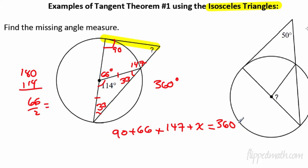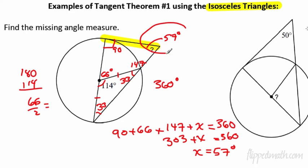So what are we going to do? We're going to set up an equation. 90 plus 66 plus 147 plus this little question mark, which I don't know, that all has to equal 360. Let's math it out a little. So 303 plus x equals 360. Subtract 303 from each side. You get x equals 57 degrees. So 57 degrees is the answer to that one.